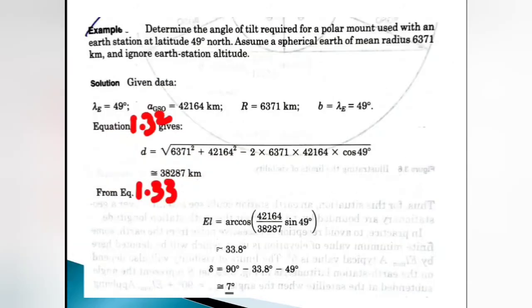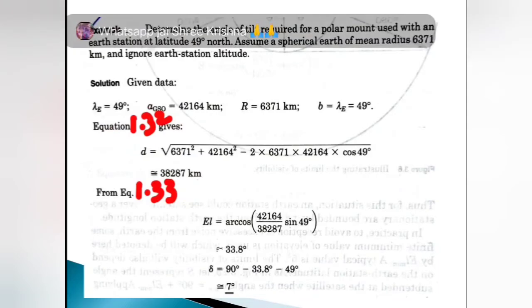Another example: determine the angle of tilt required for a polar mount used with an earth station at latitude 49° North. For a polar mount antenna, the important thing to note is that the small b value equals the lambda_e value.